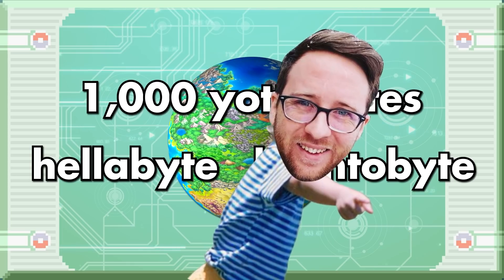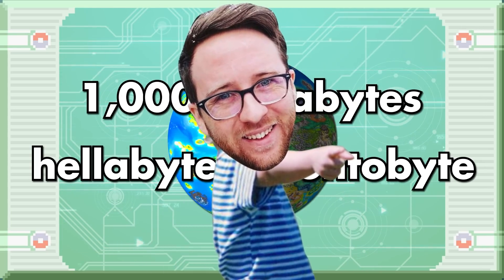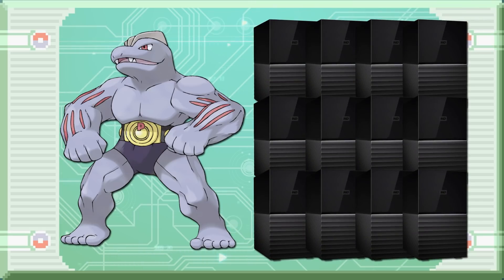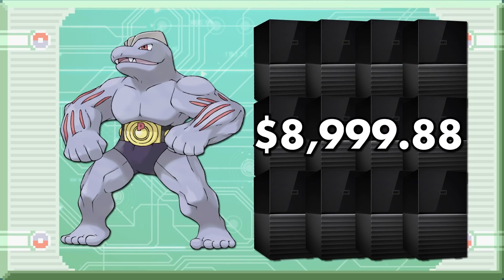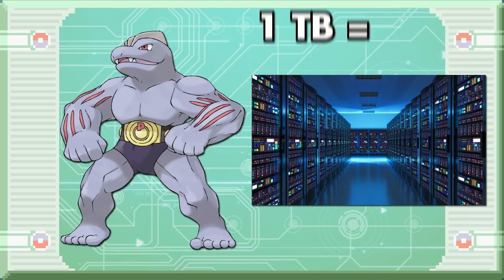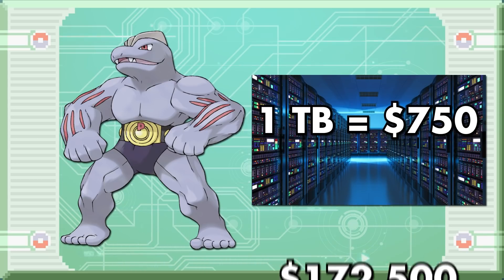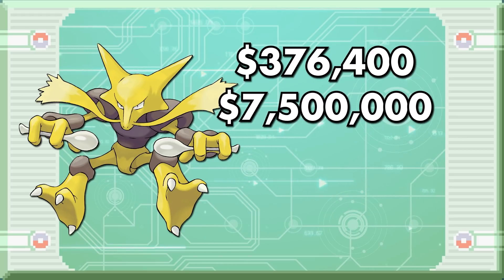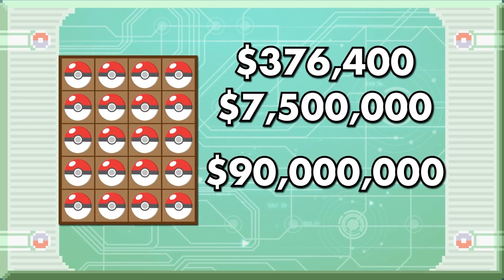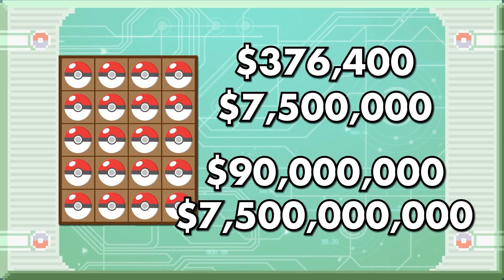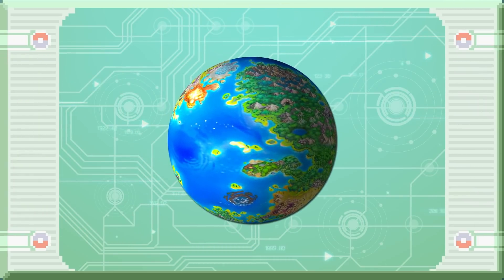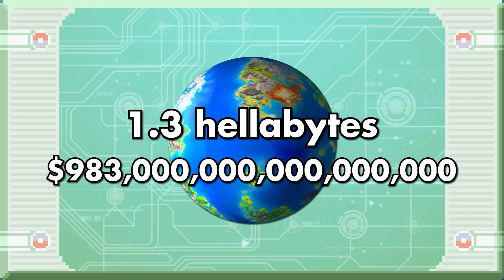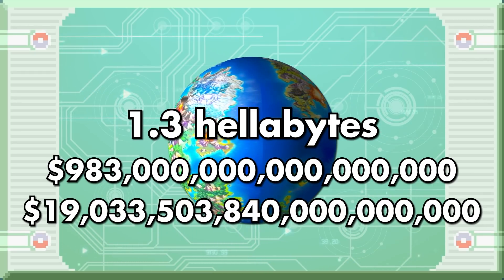I might live to see a petabyte hard drive in my home someday. In the modern day, to store one normal Pokemon — a Machoke — it would take 12 Western Digital 20-terabyte My Book Duo desktop RAID external hard drives, costing just shy of $9,000. That's the cheapest option. If you're using a data center, which values the terabyte at about $750 on average, you're looking at more like $172,500 per Machoke. These values skyrocket to $376,400 to $7.5 million for one Alakazam. A full box in Gen 1 runs between $90 million and $1.8 billion, raising to $7.5 billion for 1,000 slots. The cost of storing that 1.3 helibytes across all games would be about $983 quadrillion — which is actually cheaper than Gen 1 storage costs in 1997, because storage prices have dropped enormously since then. And all this is still way more money than exists in the entire world.